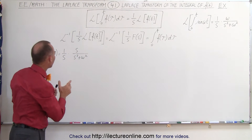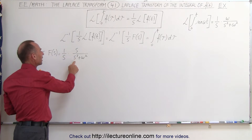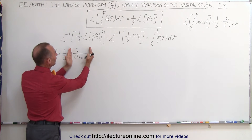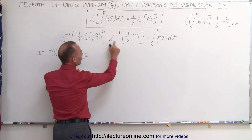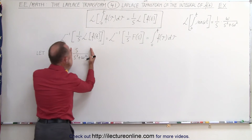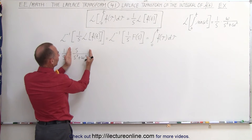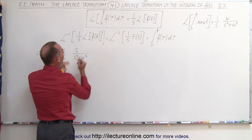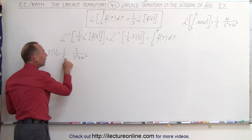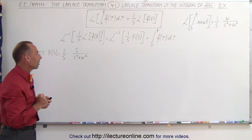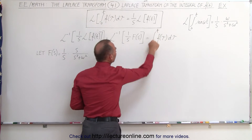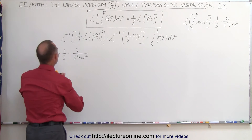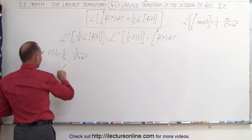For example, take 1 over s times s divided by s squared plus omega squared. If we look at just the second portion — s over s squared plus omega squared — and take its inverse Laplace transform, we would get the cosine of omega t, because the inverse Laplace transform of that portion alone is simply the cosine of omega t.